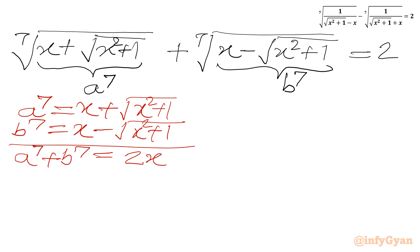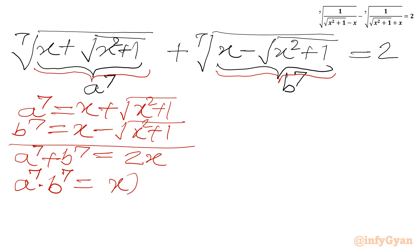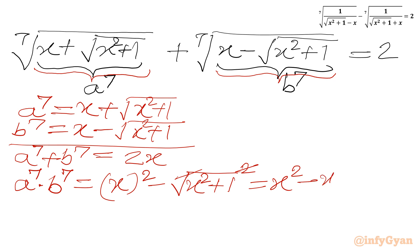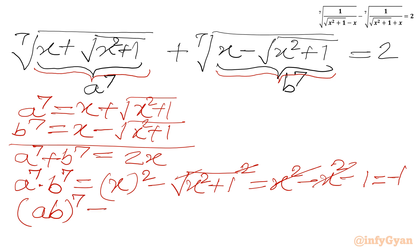Now I will check the product. So a⁷ times b⁷ — we multiply the two brackets using the difference of two squares formula: x² minus (√(x² + 1))² equals x² − x² − 1. These two terms cancel, and we get negative 1. So (ab)⁷ = −1, which equals (−1)⁷. Taking the 7th root for real values, we get ab = −1.